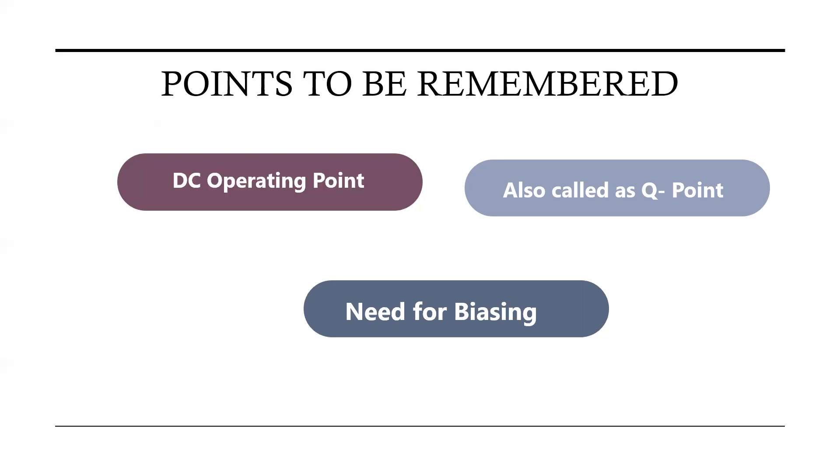Coming to the point of need for biasing: if the transistor is not biased properly, there are chances that it might work inefficiently and this might result in various distortions in the outcomes, that is the output signals.